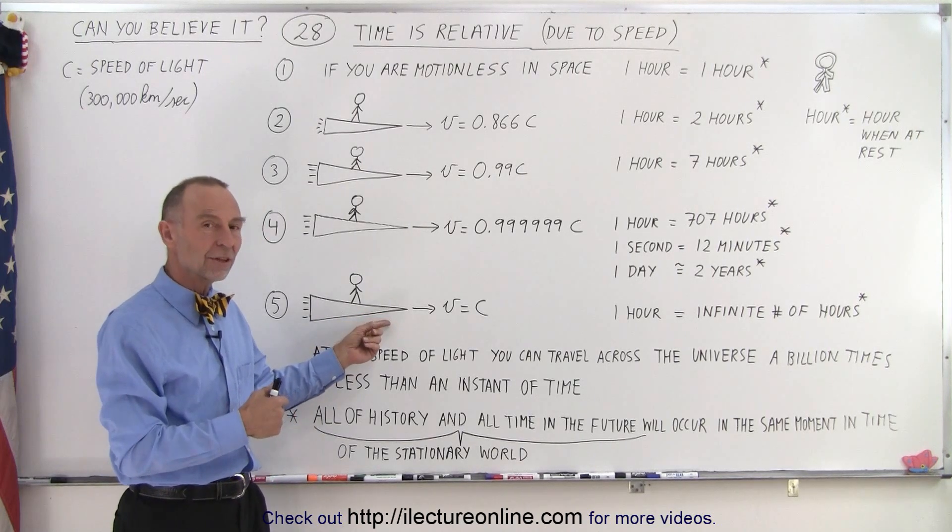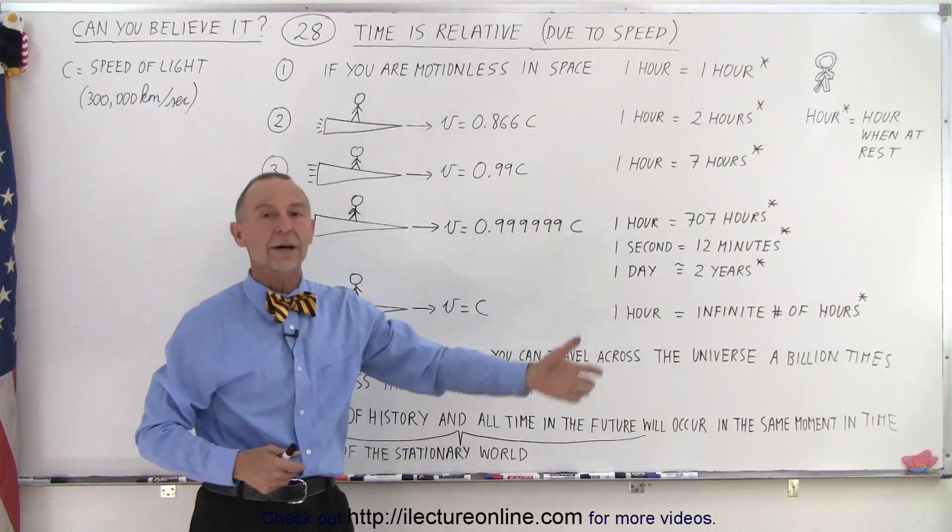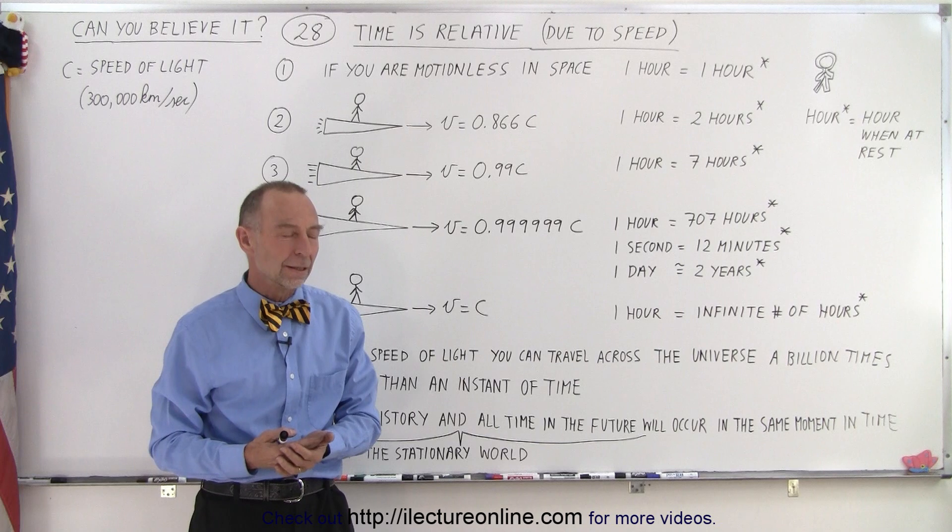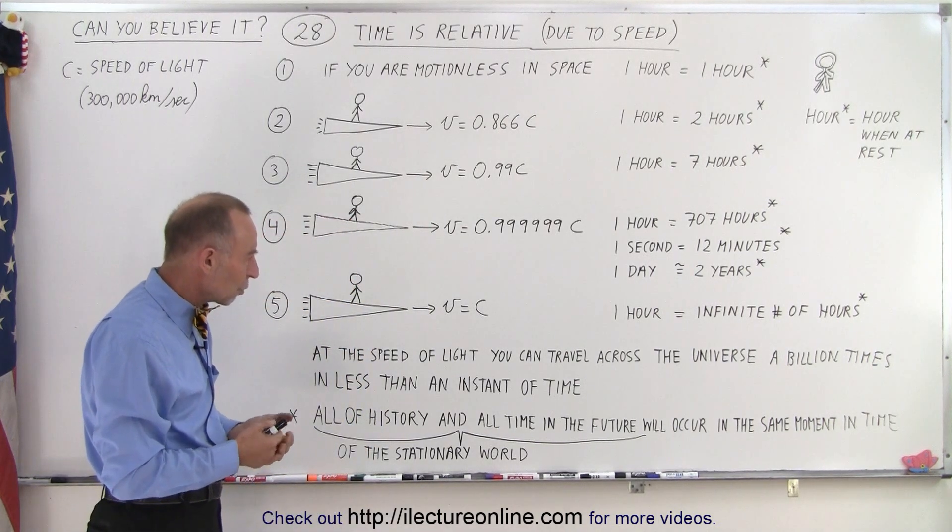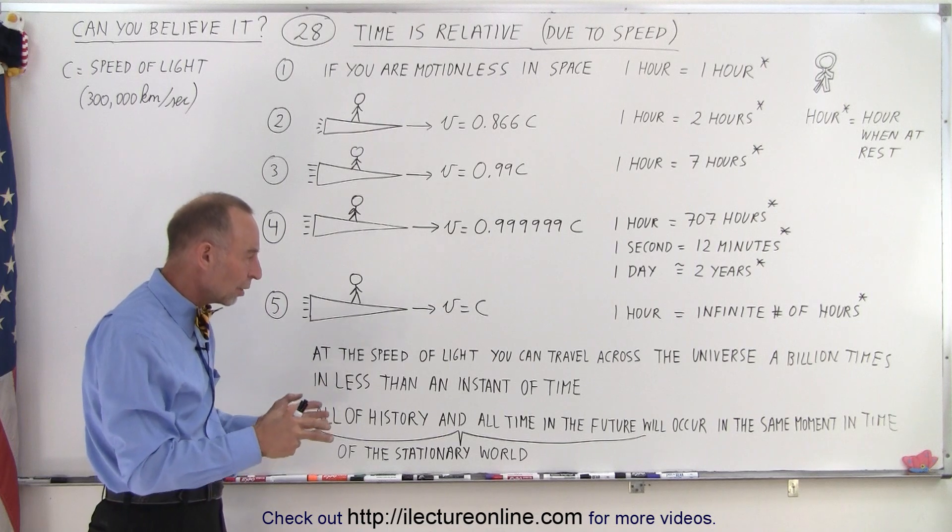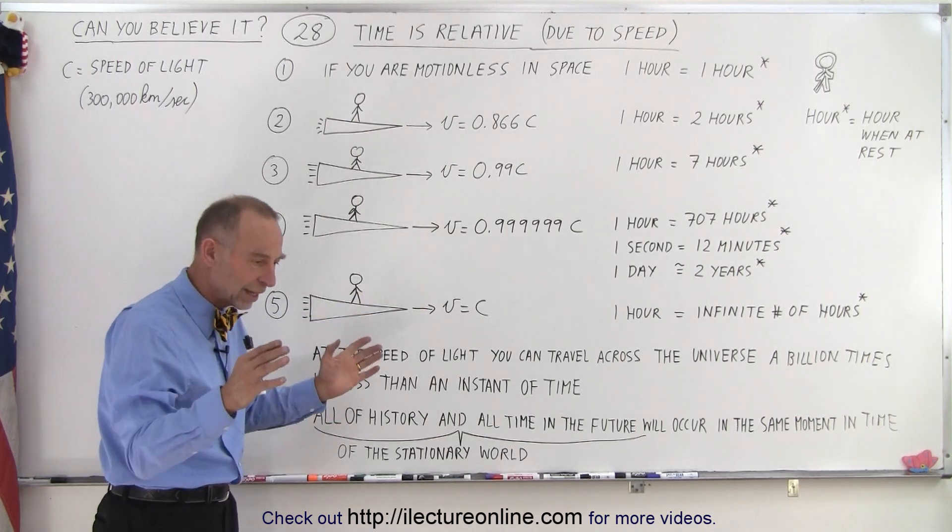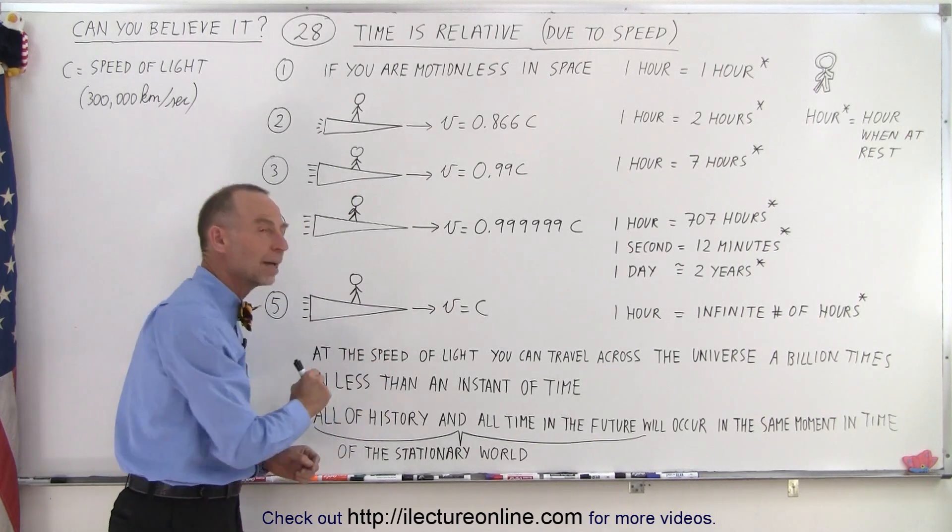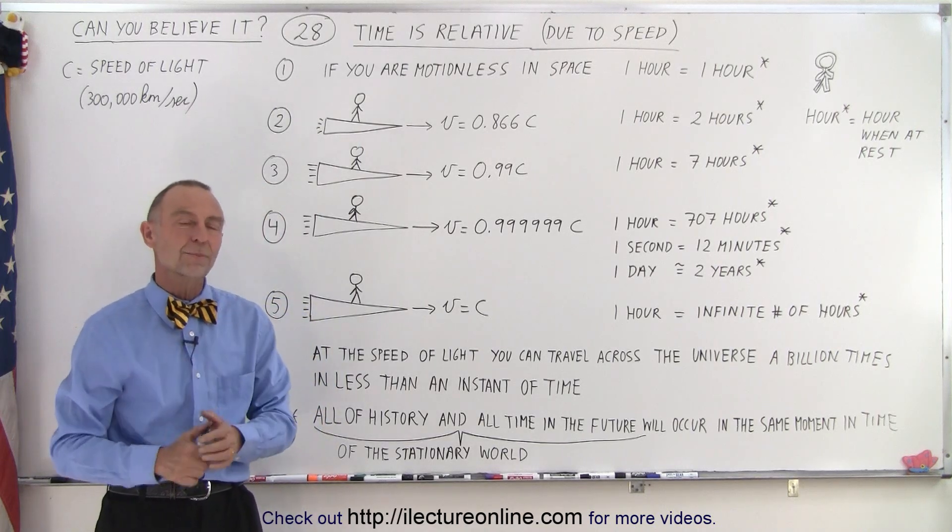That person will be everywhere in the past and everywhere in the future, and everywhere is probably not a good word. Any time in the past and any time in the future and the present, all at the same time, forever. Because time simply would not progress. So as time is not progressing for this entity, time will just continue on at the normal way that we're experiencing here today.